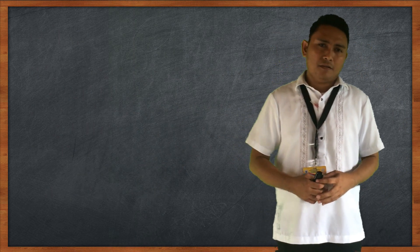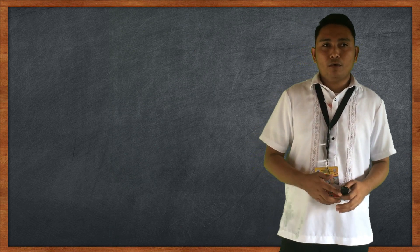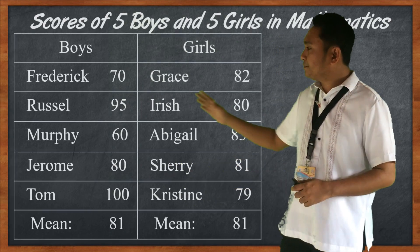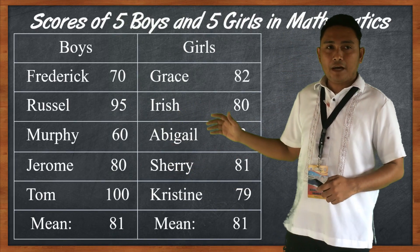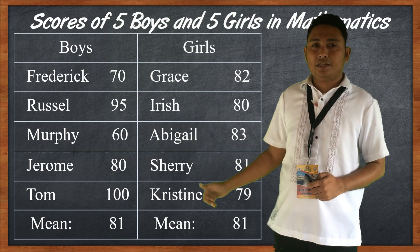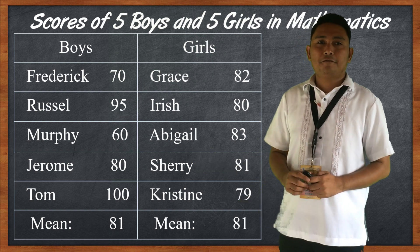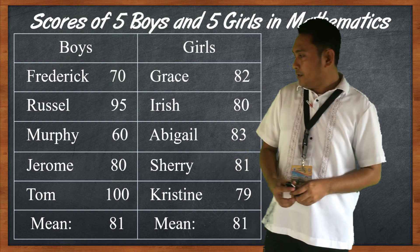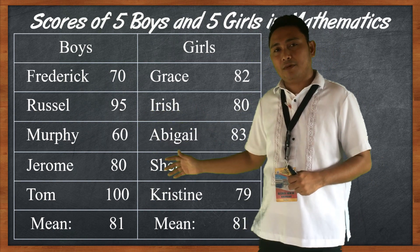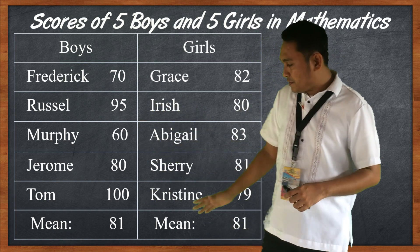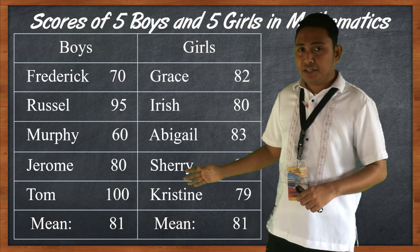Before we go into solving the Measures of Variability, you may want to look at this data. As you can see, these are the scores of five girls and five boys in a mathematics quiz. These are different sets of data, but as you can see, the mean of the boys and the mean of the scores of the girls are the same.